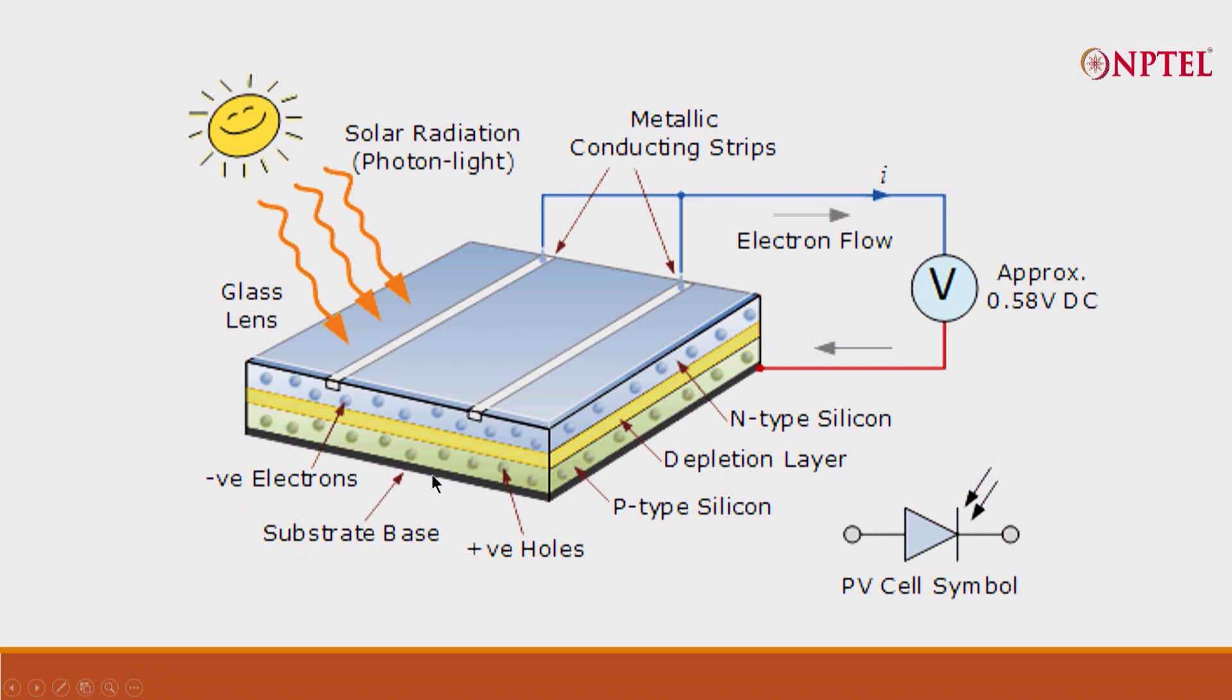There is a depletion layer, and of course, there is a bottom holding layer. There is a conductor at the top and a conductor at the bottom. This is how the current will flow when light falls. And this is the symbol of a photovoltaic cell.